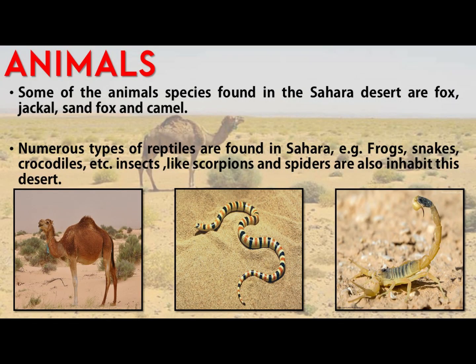Animal life in the Sahara desert. Some of the animal species found in the Sahara desert are fox, jackal, sand fox, and camel. Numerous types of reptiles are also found, like frogs, snakes, and crocodiles. Insects like scorpions and spiders are also found in this desert.